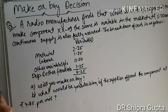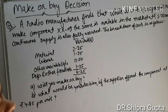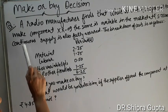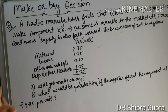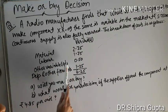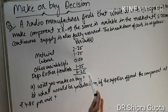The question is: a radio manufacturer finds that while it costs ₹6.25 per unit to make component XX09, the same is available in the market at ₹5.75. Continuous supply is also fully assured. The breakdown of cost is: material ₹2.75, labor ₹1.75, other variable expenses ₹0.50, depreciation and other fixed costs ₹1.25 — total cost ₹6.25. Question: will you make or buy?